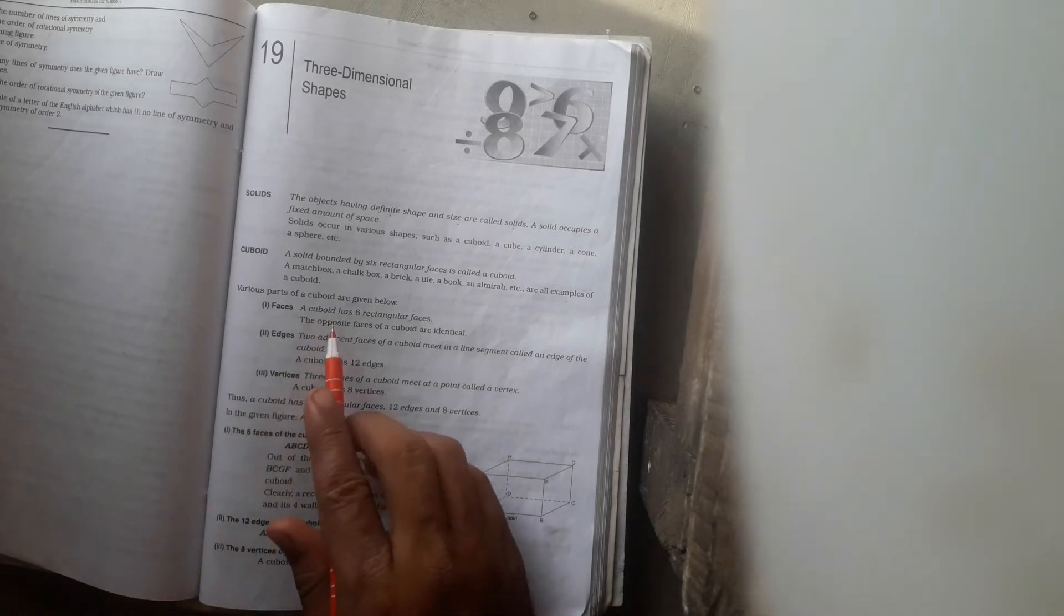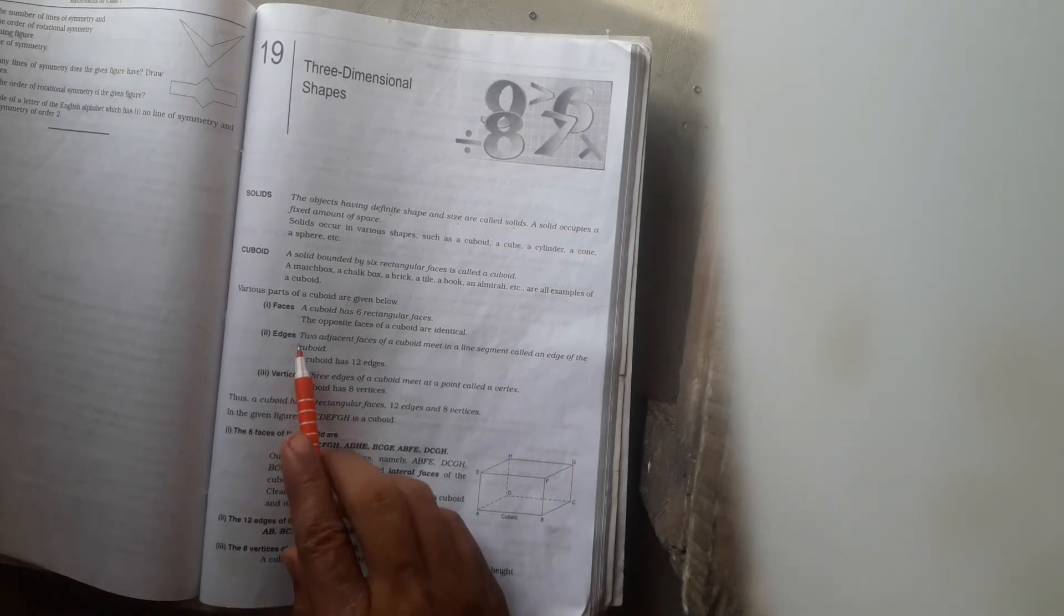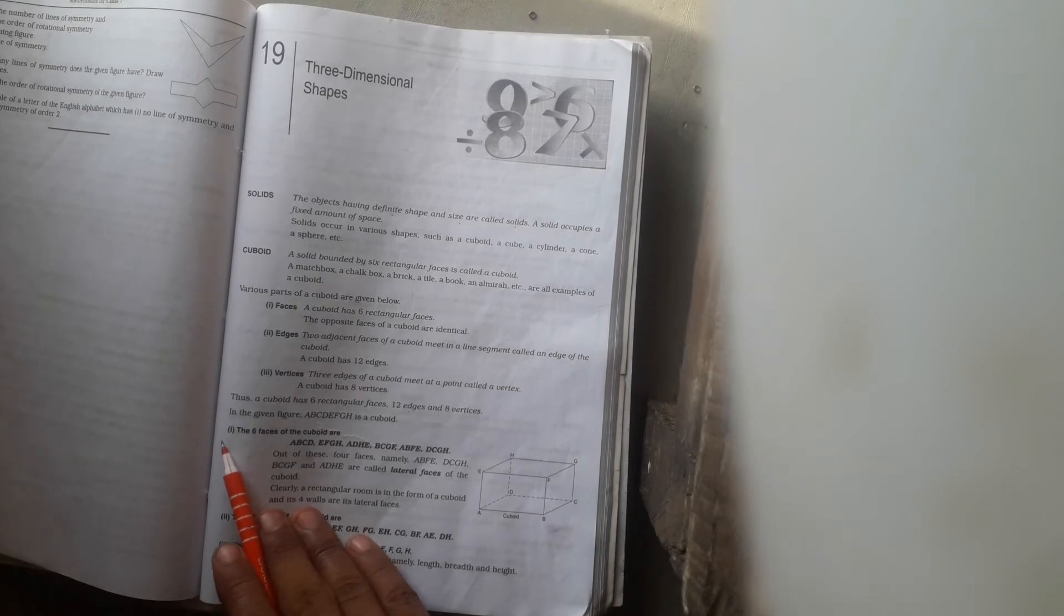Student, various parts of cuboid. First, faces: a cuboid has six rectangular faces. This is the figure of cuboid. Two adjacent faces of a cuboid meet in a line segment called an edge of the cuboid.